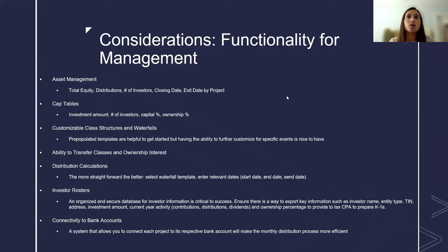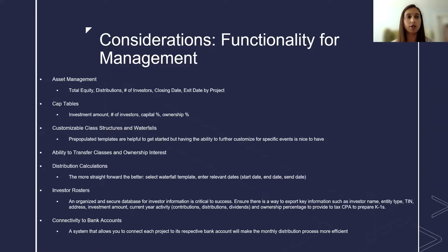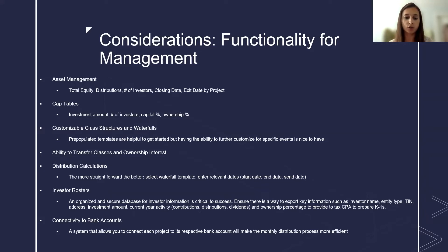Next is the functionality for your internal management. First is high-level asset management — you want a system that can clearly and accurately detail all your projects, showing their total equity and distributions. It's very helpful to have a way to export distributions by date so you can get year-to-date distributions or distributions for one quarter or one month.